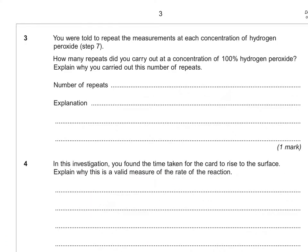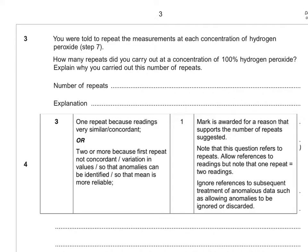So in terms of repeating the measurements, I actually told the students to do it at least twice. And it says, how many repeats did you carry out at a concentration of a hundred percent? Explain why you carried out this number of repeats. So the minimum would be one repeat because if you had very similar readings, there's no need to repeat it again. Or if you did two or more because the first repeat, there was variation in the values or you're trying to identify anomalies. So the mark is awarded for a reason that supports the number of repeats suggested. So you're looking for results that are very similar. Therefore you can do a minimum number of repeats.